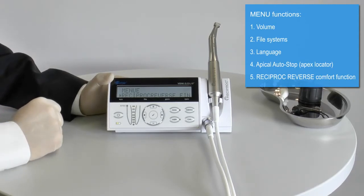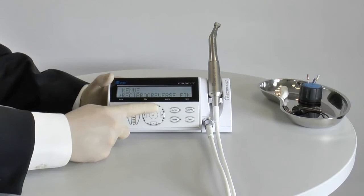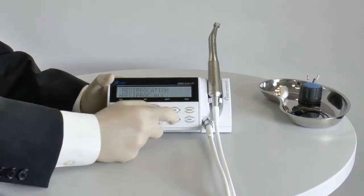An additional function is the reciproc reverse comfort function. This two-step indicator gives early feedback in the case of increased friction of the reciproc instrument. It is especially helpful for new reciproc users.